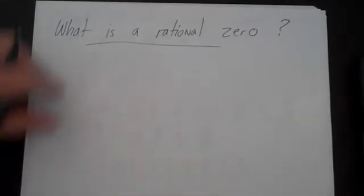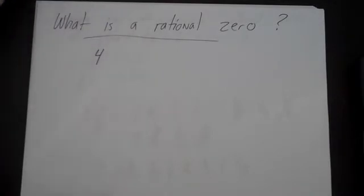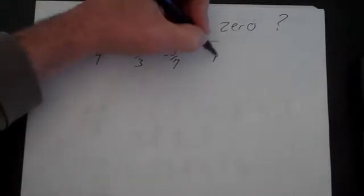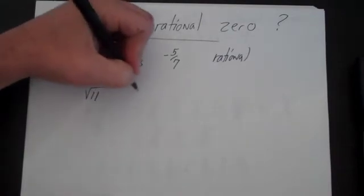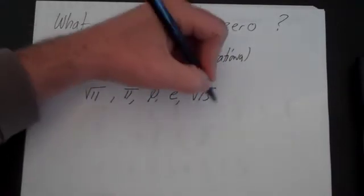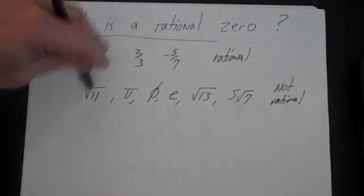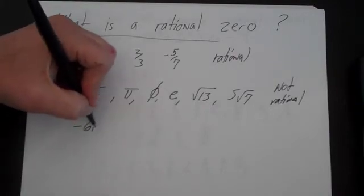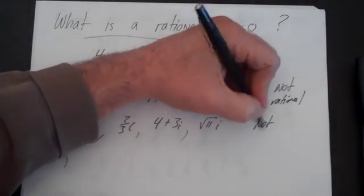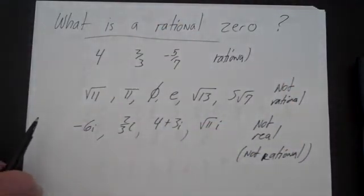Let's think about what we mean by a rational zero. A rational number is simply a real number that can be written as a fraction. For example, 4, 2/3, and -5/7 are all rational. Square root of 11, pi, phi, e, square root of 13, and 5√7 are not rational. Also not rational are imaginary numbers such as -6i, (2/3)i, 4+3i, and √11·i — those are not real, and because they're not real, they're also not rational. Rational numbers are defined only as real numbers which can be written as a fraction.